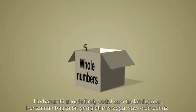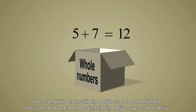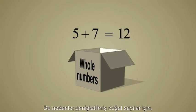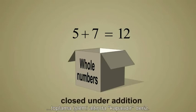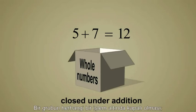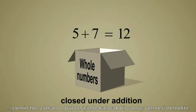When any two whole numbers are added, we always get another whole number. Therefore, we say the whole numbers are closed under the operation of addition. A group being closed under some operation means that the operation will always create a result which is also a member of that same group.